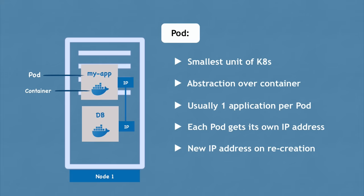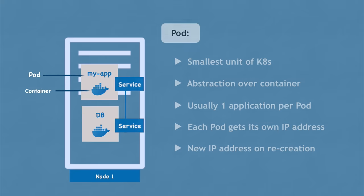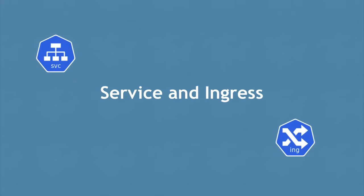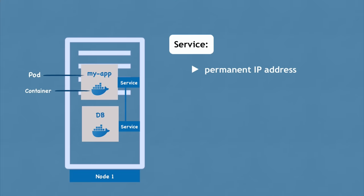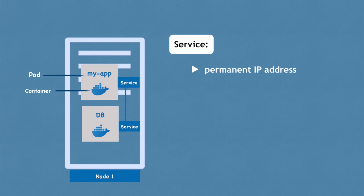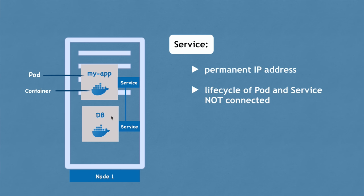A service is basically a static or permanent IP address that can be attached to each pod. My app will have its own service and the database pod will have its own service. The good thing is that the life cycles of service and pod are not connected — even if the pod dies, the service and its IP address will stay, so you don't have to change that endpoint anymore.